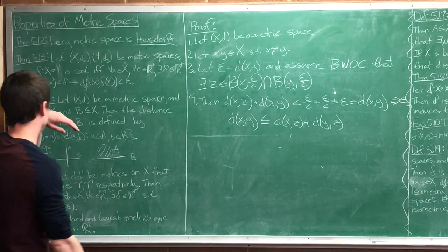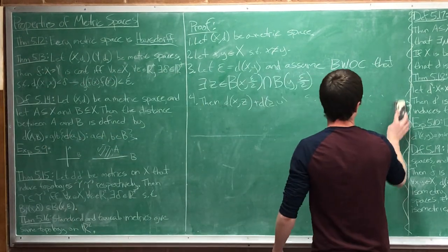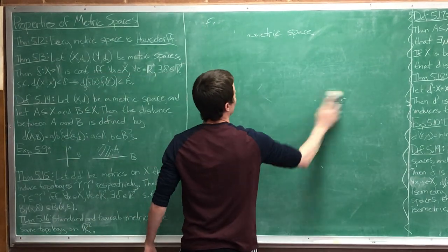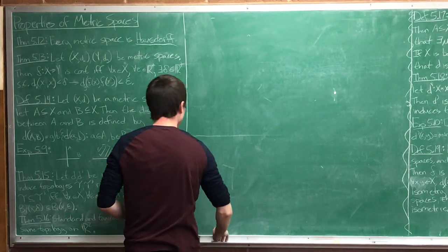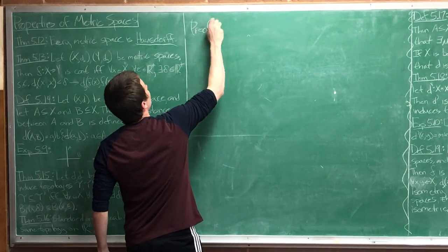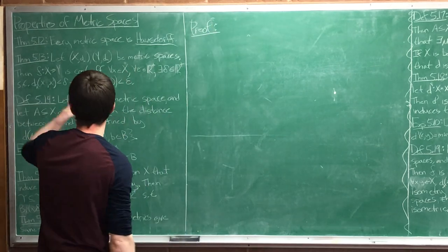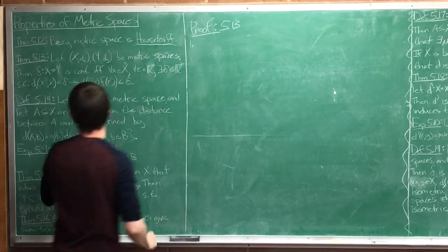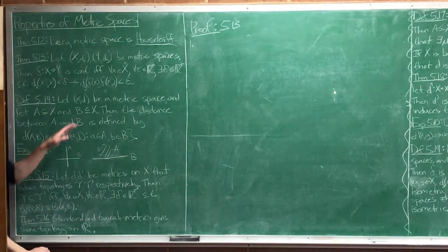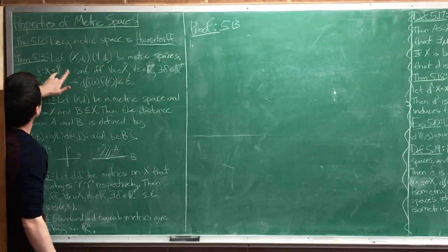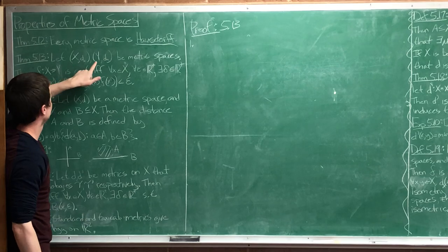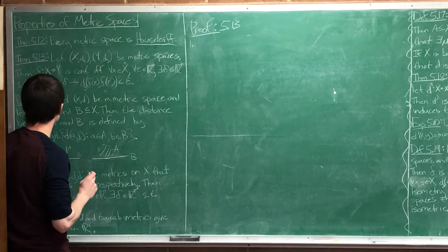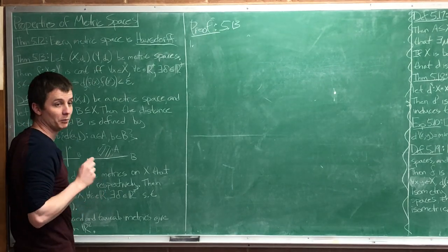That's the first proof. Now let's do the next proof. Let X with metric d_x and Y with metric d_y be metric spaces. Then f from X to Y is continuous if and only if - remember what it means for a function to be continuous? In topology, continuous functions have the simplest definition ever: a function is continuous provided that the pre-image of open sets are open.